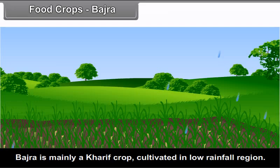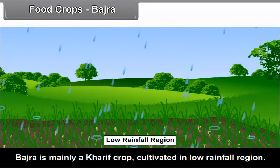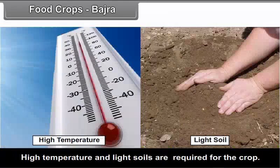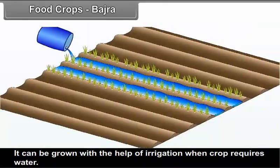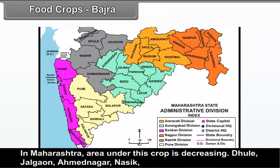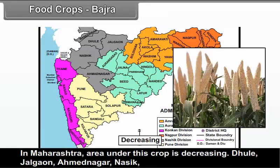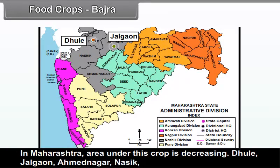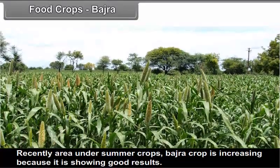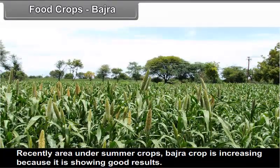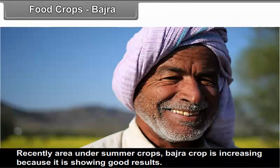Bajra: Bajra is mainly a Kharif crop cultivated in low rainfall regions. High temperature and light soils are required for the crop. It can be grown with the help of irrigation when needed. In Maharashtra, the area under this crop is decreasing. Dhule, Jalgaon, Ahmadnagar, Nashik, Pune, and Satara are the main Bajra-producing districts. Recently, the area under summer Bajra crop is increasing because it is showing good results.